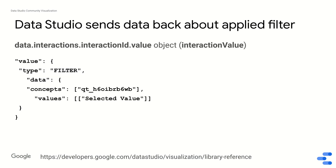Data Studio sends data back about this applied filter. This interaction value object, which comes from the data.interactions.interaction.id.value object — it's in the documentation — comes back and it tells you type is filter. So that's the user has selected to use this as a chart filter. Here the data is kind of concepts, here's this concept ID or dimension ID, and the values is an array of arrays of selected values. In other words, it's actually a mirror of the thing that you send to Data Studio in order to apply a filter.